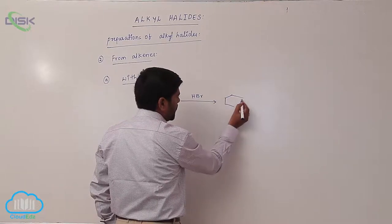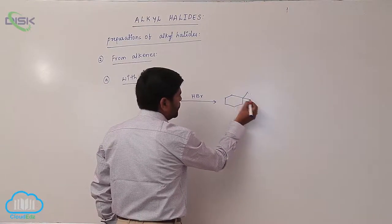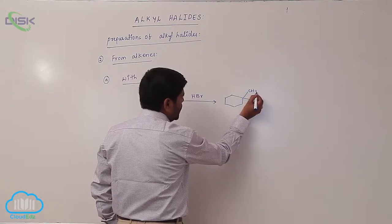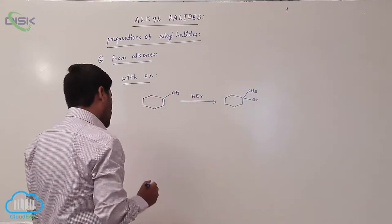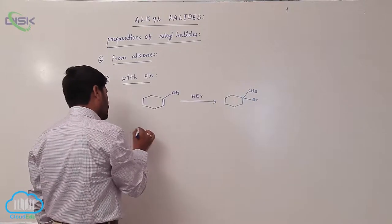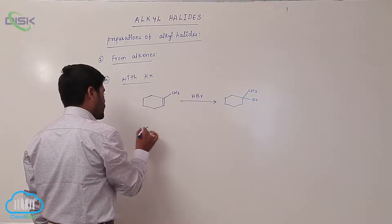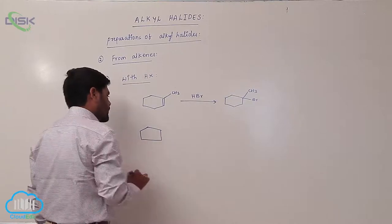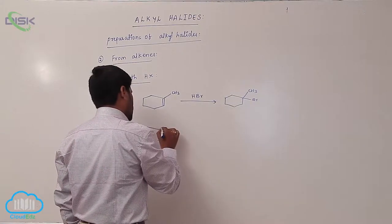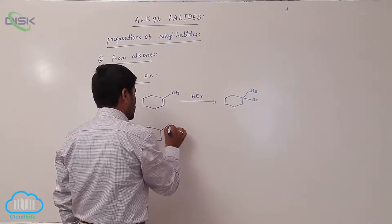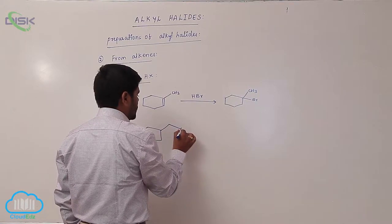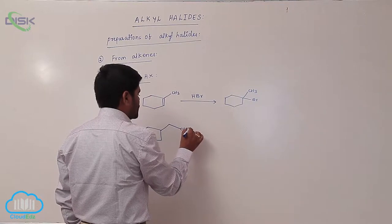Erase Br, then erase the methyl group. Now here is CH, then CH double bond, and here is CH2.